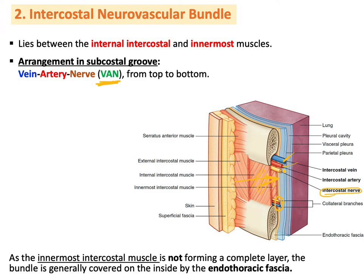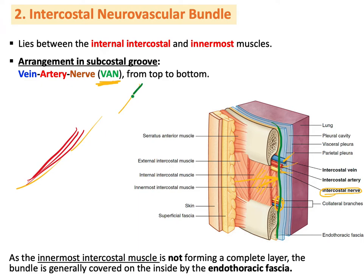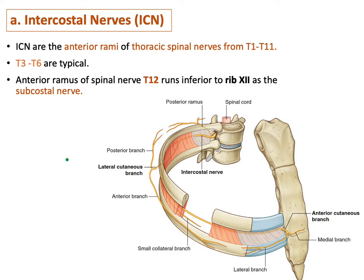The neurovascular bundle is located between the internal intercostal and innermost intercostal muscles. The innermost intercostal muscle is not a continuous muscle — it has three parts. Where there is no innermost intercostal muscle, we have instead the endothoracic fascia, which lines the innermost muscle and covers the gaps there.